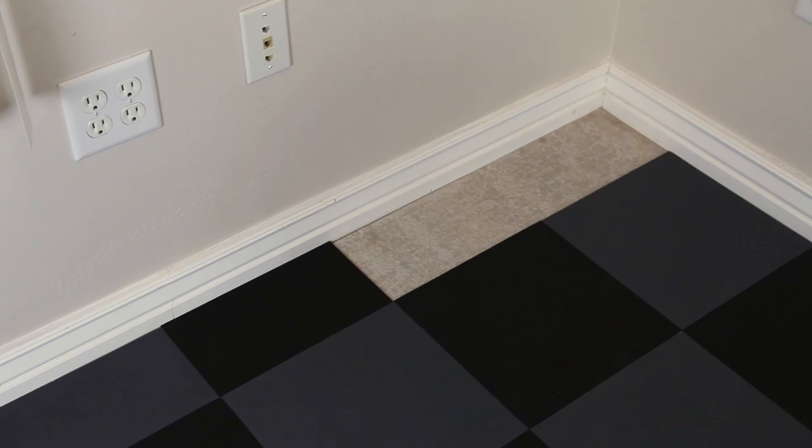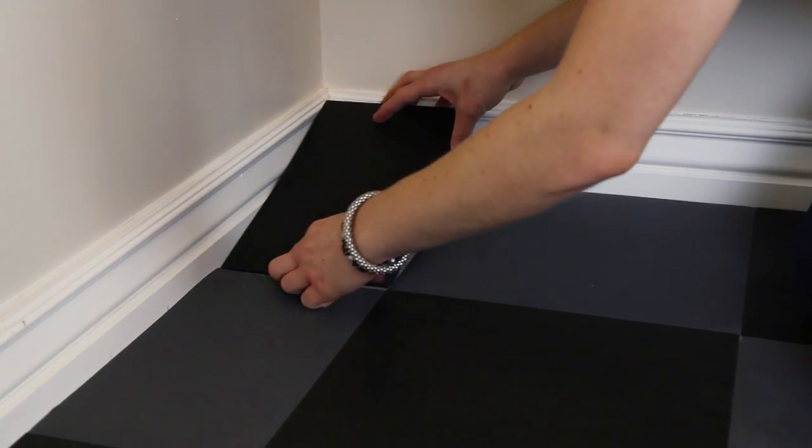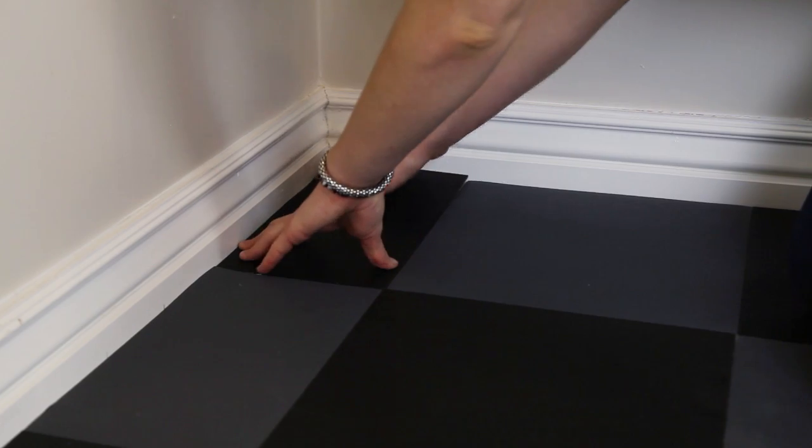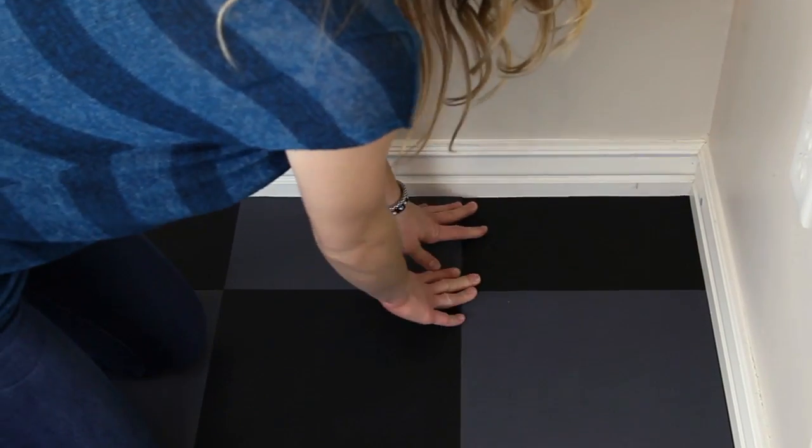Continue installing the floor, cutting to fit as necessary. Once you've completed your first quadrant, you should have no problems finishing the rest of the room following the steps you've just taken.